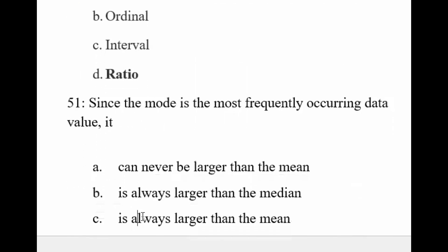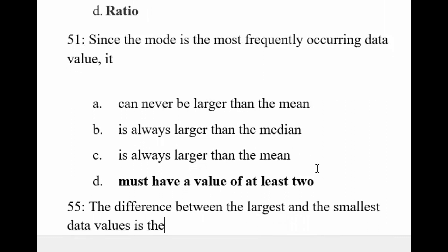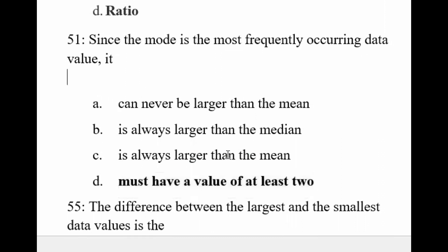The most frequently occurring data value can never be larger than the mean — this could be correct. Mode is not always larger than the median. 'Always larger than mean' is also not always true. Mode must occur at least two times; at minimum two values appear for it to be called mode. The most frequently occurring element must appear at least twice.